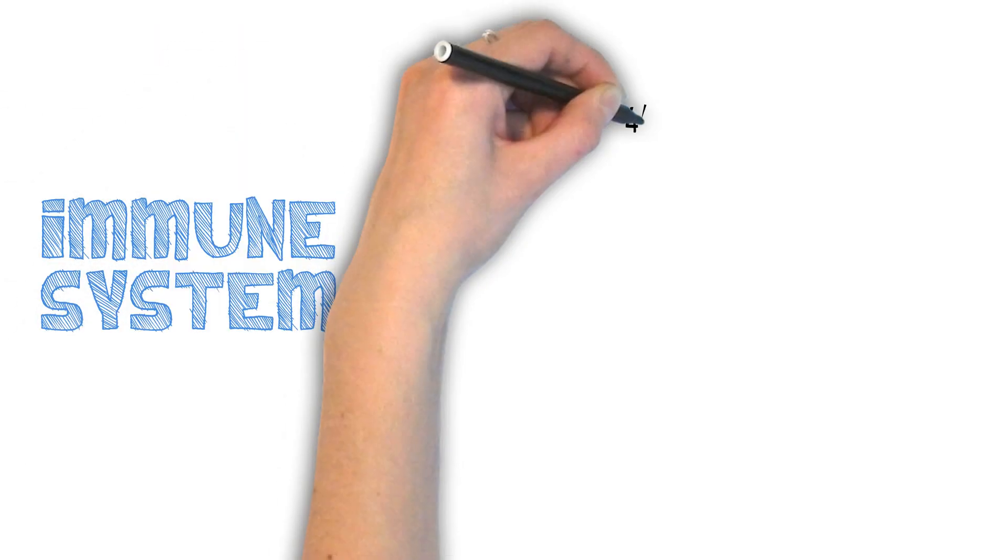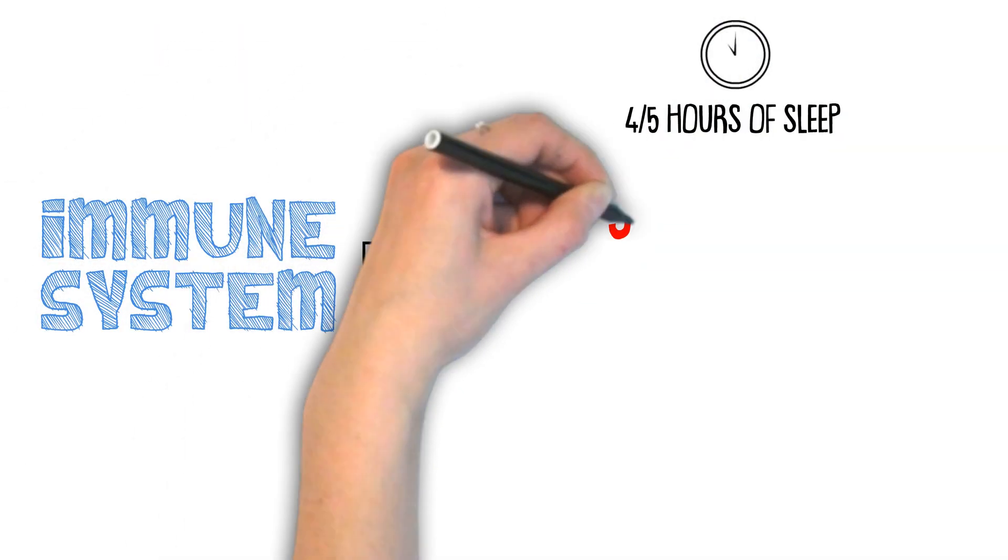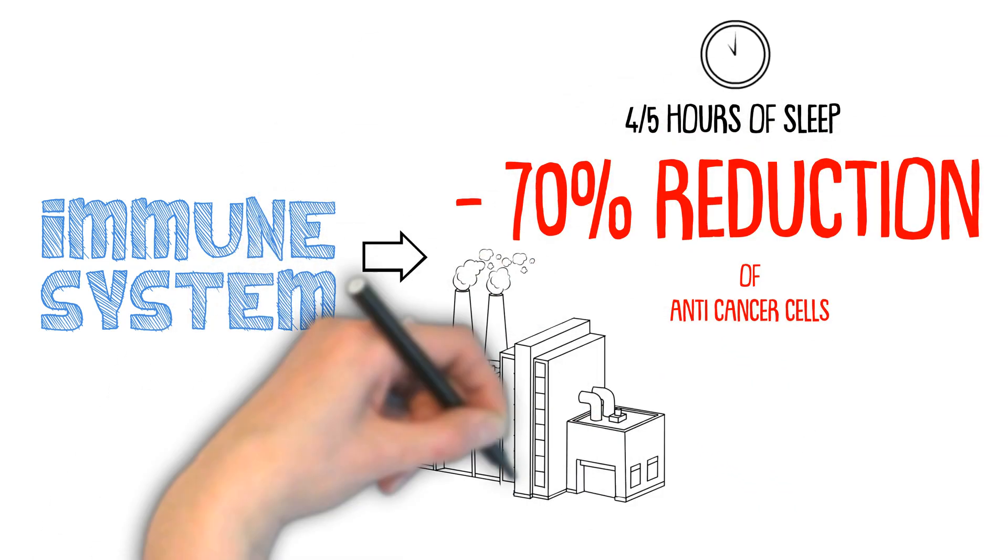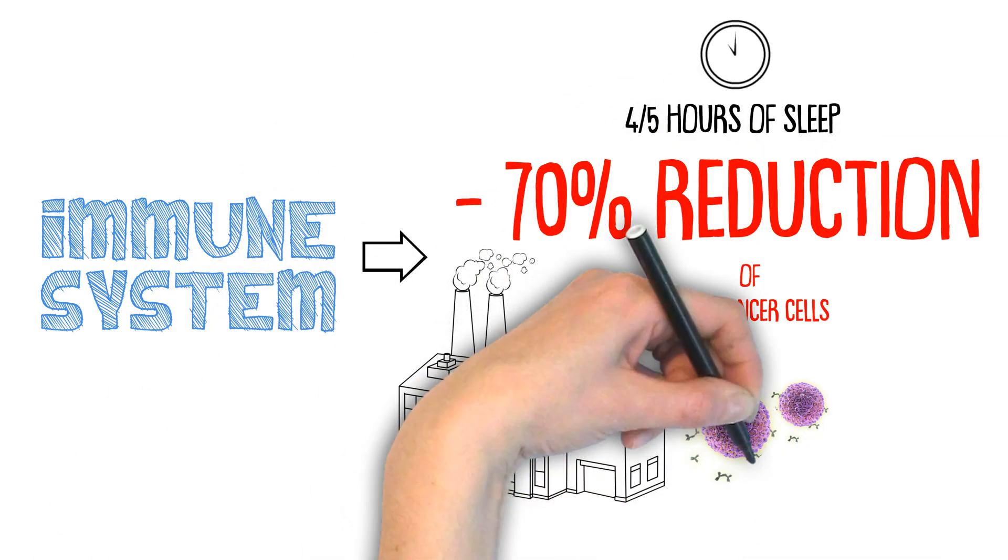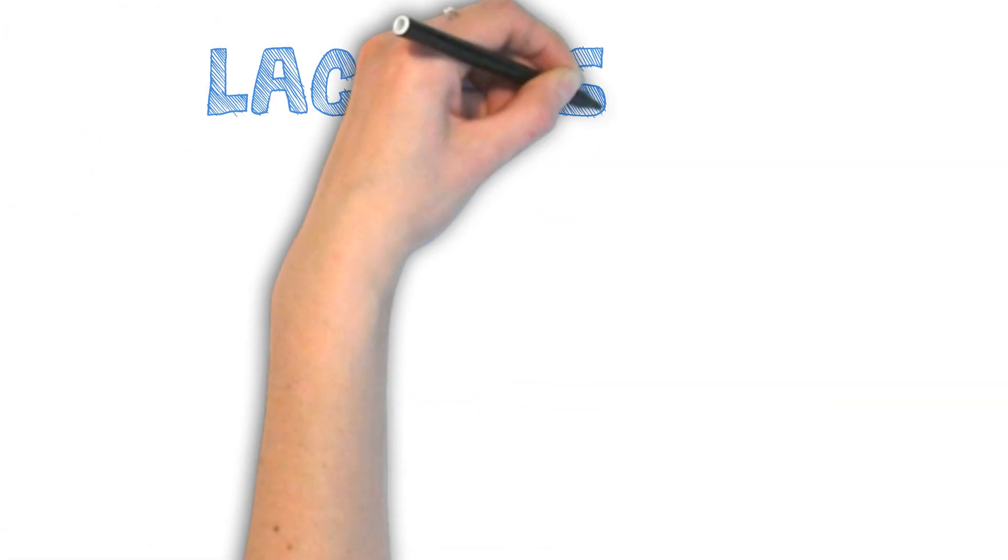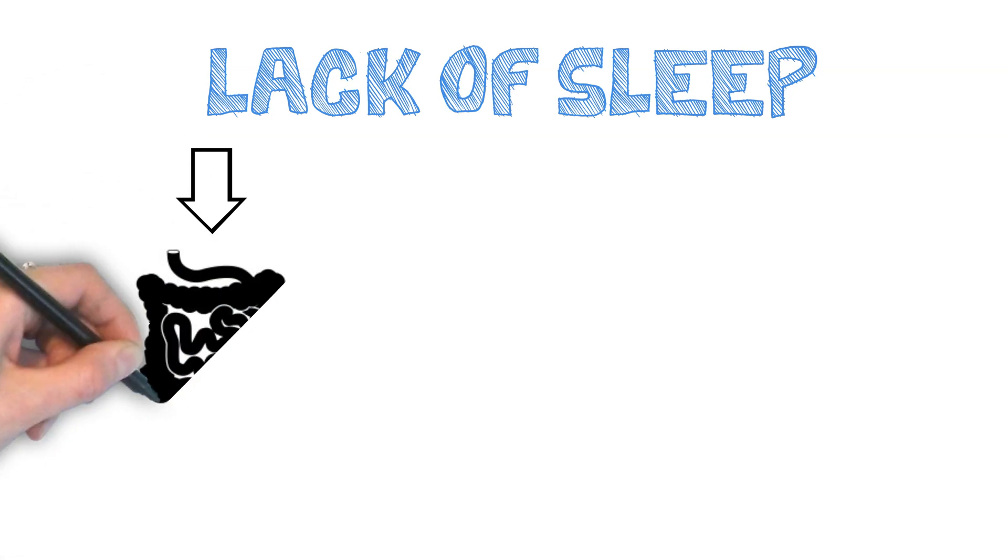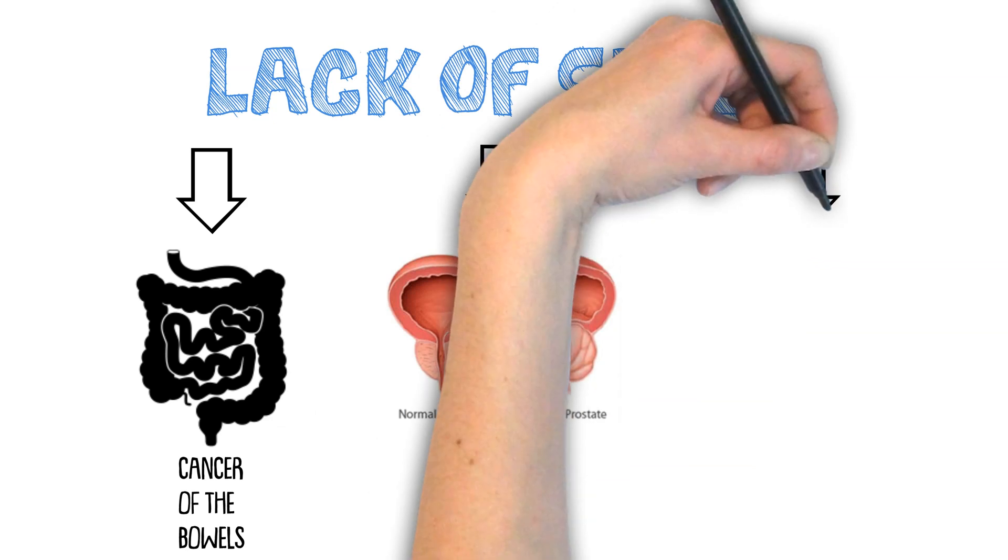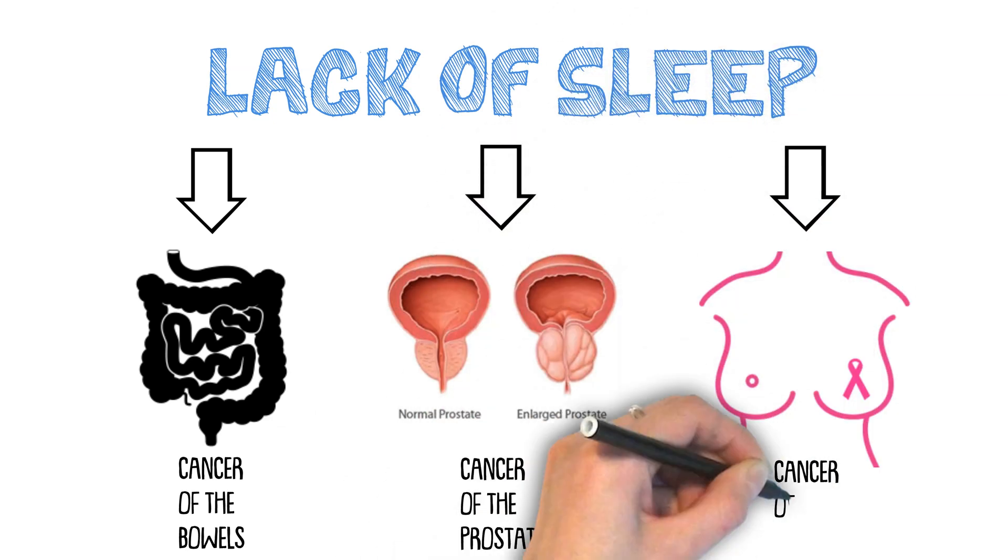Lack of sleep also impacts your immune system. After one night of 4-5 hours of sleep, there is a 70% reduction in critical anti-cancer immune cells called natural killer cells. That's the reason why short sleep raises your risks in developing numerous forms of cancer. That list currently includes cancer of the bowels, cancer of the prostate, as well as cancer of the breast.